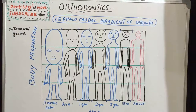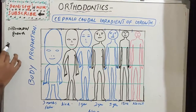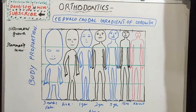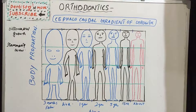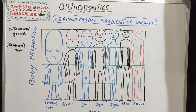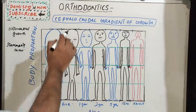Differential growth can be expressed in two ways. The first is Scammon's curve, which we already discussed — where I explained the neural tissue, genital tissues, general tissues, and lymphoid tissues, and how they are accelerated at different ages throughout the postnatal period. The second is the cephalocaudal gradient of growth.